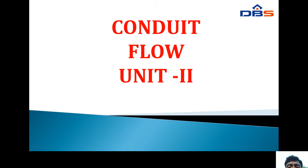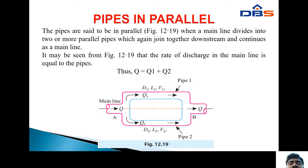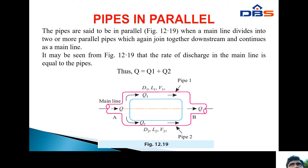Conduit flow, Unit Number 2, Fluid Mechanics and Hydraulic Machines. Pipes in parallel connections: the pipes are said to be in parallel as shown in figure. The main pipe is divided into two small pipes, or two small pipes are connected to the major pipe. Two pipes are connected in parallel connections.